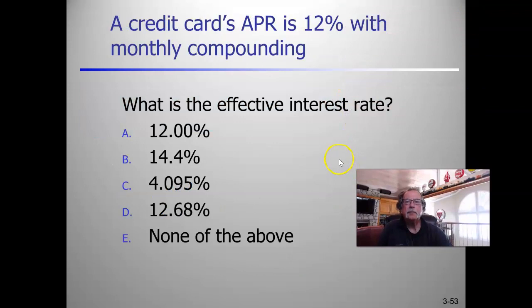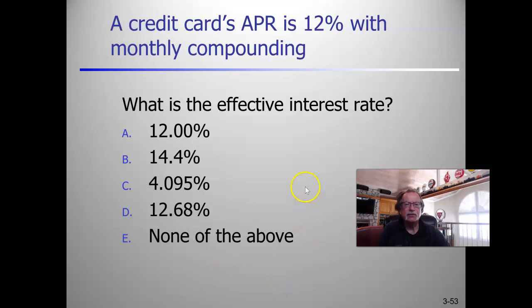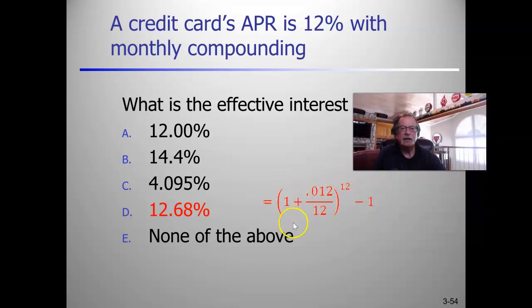If a credit card's APR is 12% with monthly compounding, what is its effective interest rate? APR means annual percentage rate, which is a nominal interest rate. The calculation for the effective interest rate gives 12.68% — answer D. So if you have a credit card with a 12% interest rate and you're carrying a balance, you're effectively paying 12.68%.